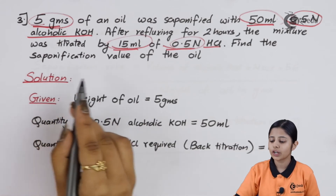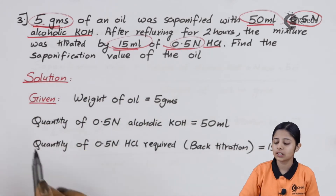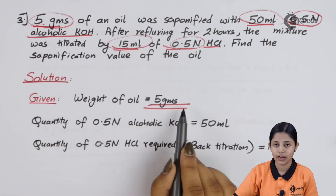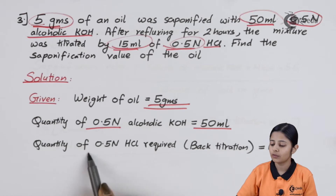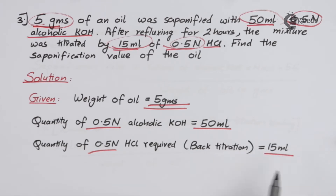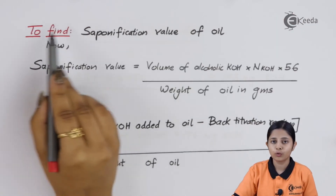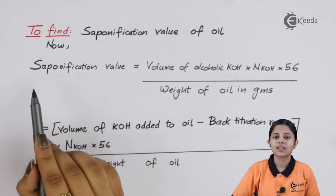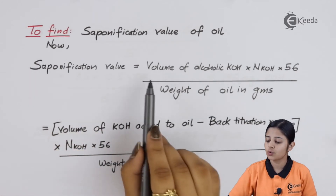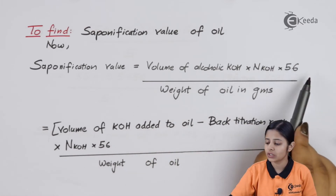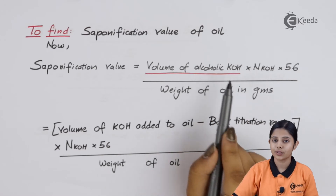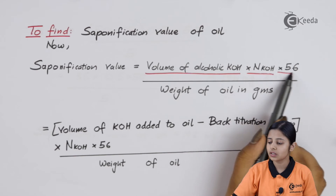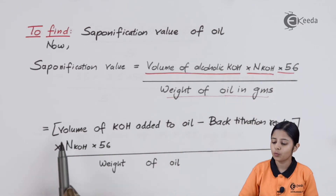Find the saponification value of the oil. Given: weight of oil = 5 grams, volume of 0.5 N alcoholic KOH = 50 ml, volume of 0.5 N HCl for back titration = 15 ml. The formula is: Saponification Value = (Volume of alcoholic KOH × Normality of alcoholic KOH × 56) / Weight of oil in grams. Volume of KOH = volume of KOH added to oil minus back titration reading.